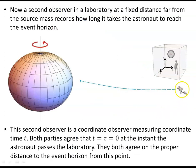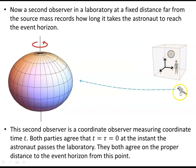Now consider a second observer in a laboratory at a fixed distance from the source mass, far from the source. They have their own clock and record how long it takes the astronaut to reach the outer event horizon. This second observer is a coordinate observer measuring coordinate time t. Both parties agree that t = tau = 0 at the instant the astronaut passes the laboratory — the point at which the astronaut is released from rest.